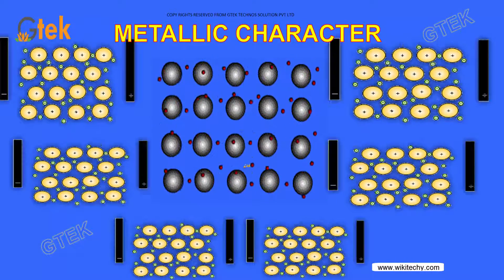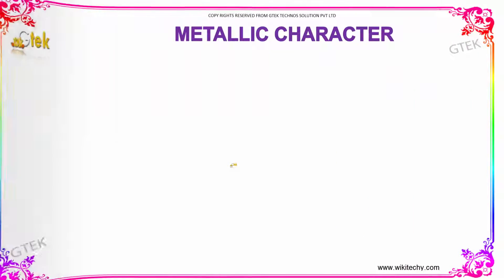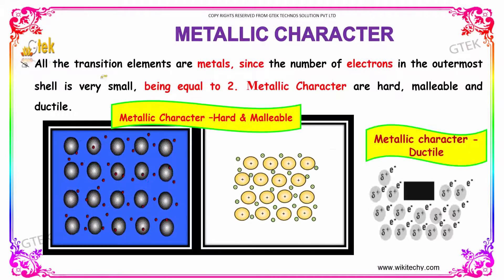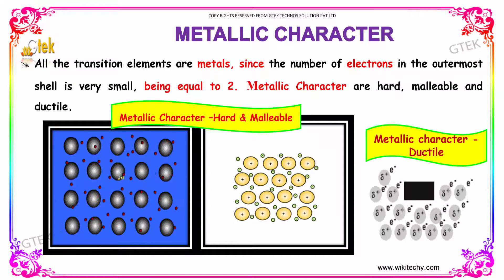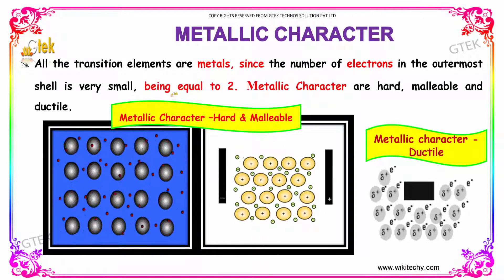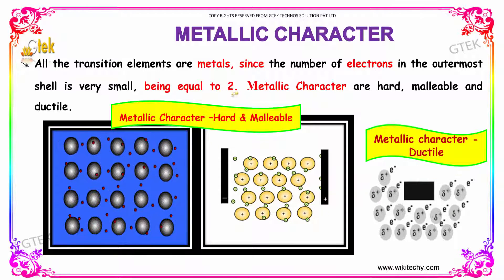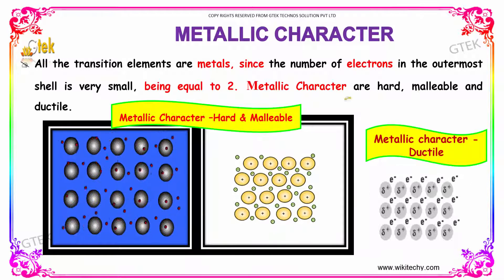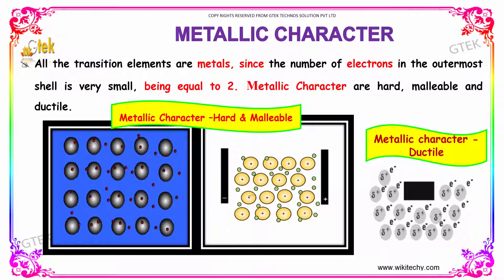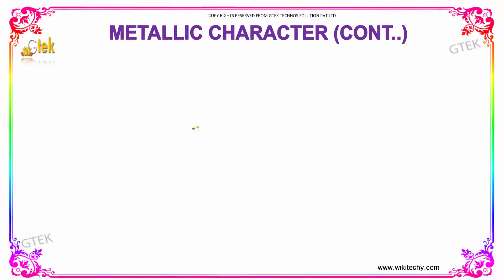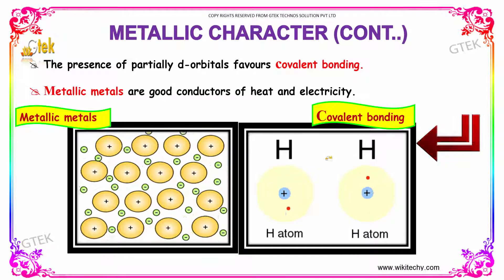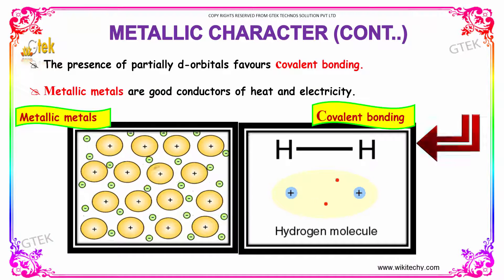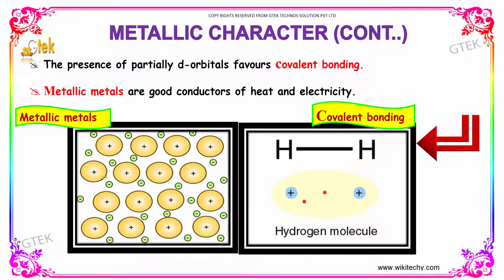The next one is metallic characteristics. All the transition elements are metals. Since the number of electrons in the outermost shell is really very small, being equal to two, the metallic characters are hard, malleable, and ductile in nature. The presence of partially filled d orbitals favors the covalent bond. Metallic metals are good conductors of heat and electricity.